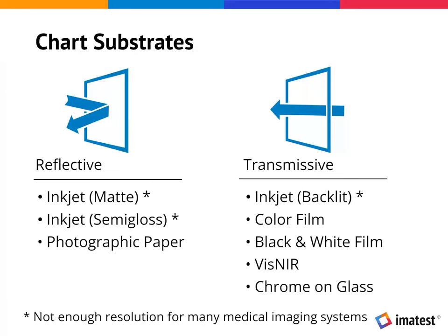I'll pass the mic to Ian to talk about test charts. Our test charts can be broken down into two camps: reflective and transmissive charts. This relates to the actual media the chart is printed on or made from. These different materials have different properties, and most patterns are available in both reflective and transmissive, though some are only available in one type.